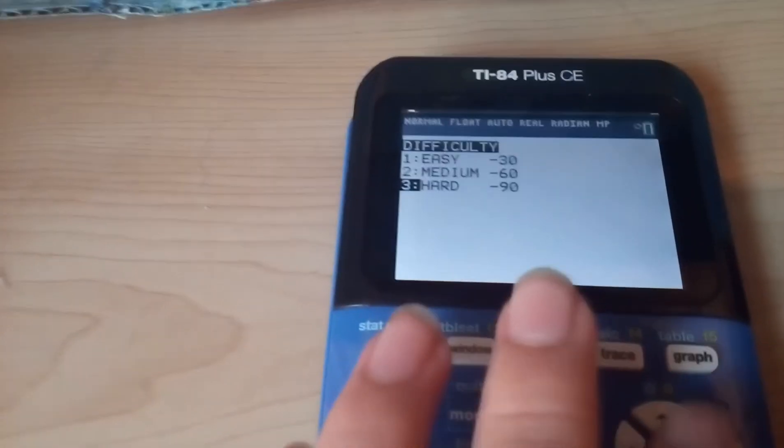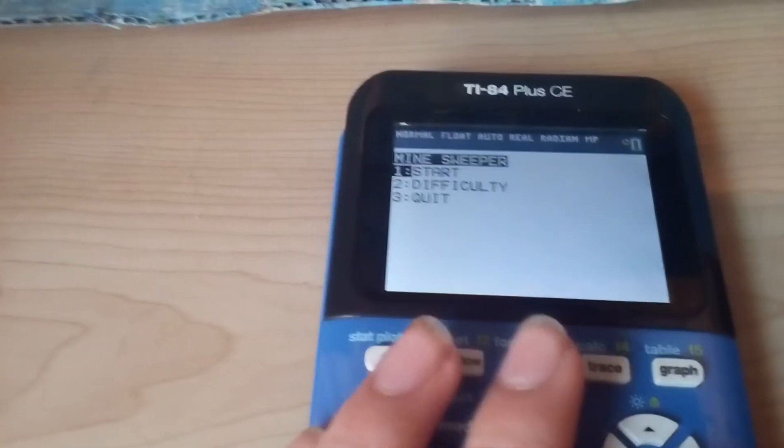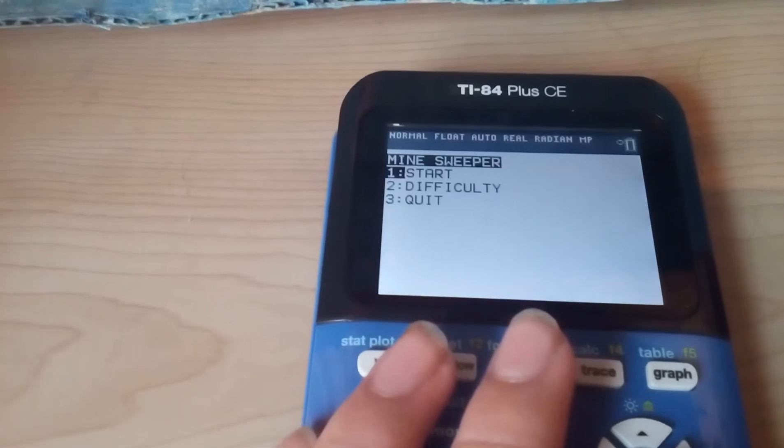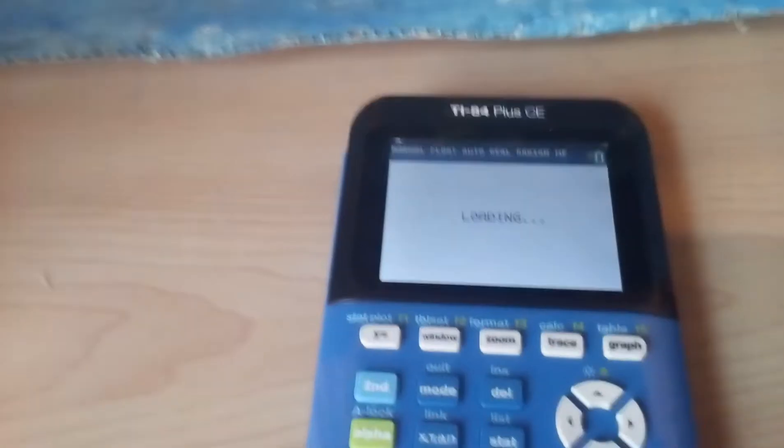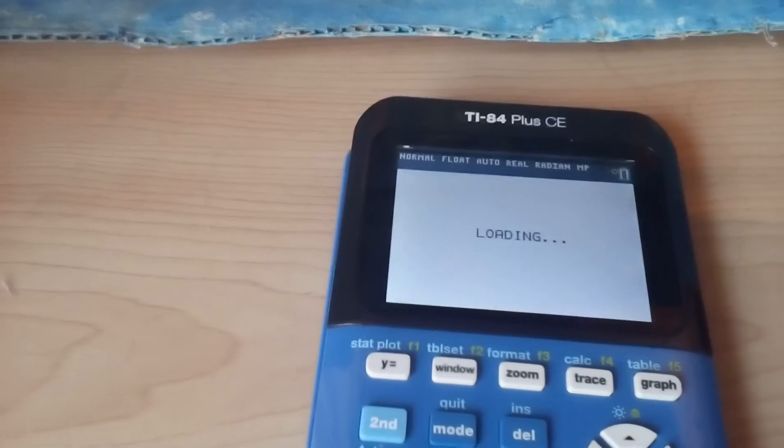You can set how many bombs on this so I'll set it to hard. I hit start and it'll load and it places bombs randomly within the map, within this 10 by 26 area here.